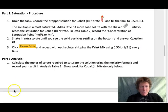So here's part two, we're going to look at saturation. We're going to drain the tank and start over, we're going to choose the dropper instead of the shaker and fill the tank to half a liter. And then we're going to switch to the shaker and add a solid until we reach saturation for the cobalt nitrate. And then we're going to record the concentration at the saturation point.